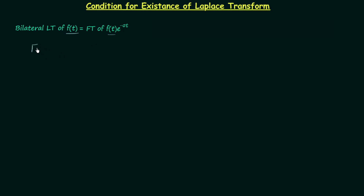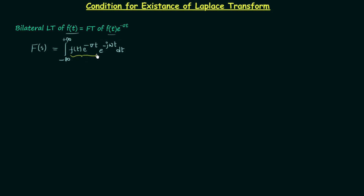If the bilateral Laplace transform of signal F(t) is F(s), then it equals the Fourier transform of F(t)·e^(-σt), which is the integration from minus infinity to plus infinity of F(t)·e^(-σt)·e^(-jωt) dt. Let F1(t) = F(t)·e^(-σt), so the bilateral Laplace transform equals the integration from minus infinity to plus infinity of F1(t)·e^(-jωt) dt. We know the Fourier transform exists only for absolutely integrable signals.